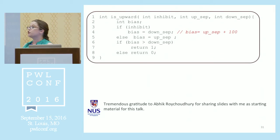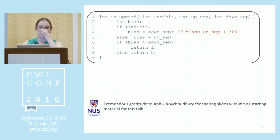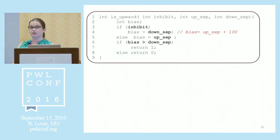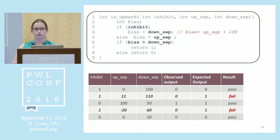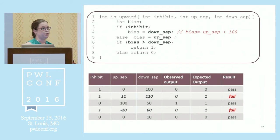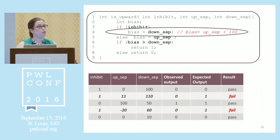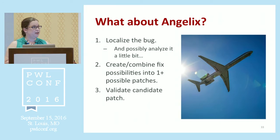Here's some source code that I do not want you to try and understand, because it doesn't matter. What matters is that line four is wrong — what it should read is bias equals upsep plus 100. Angelix is only going to try and fix expressions in if conditions and right-hand sides of assignments — those are the bolded items. We can use test cases to localize to particular expressions most likely associated with the fault. The existing work in spectrum-based fault localization can identify this line as faulty pretty easily.